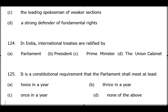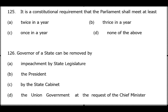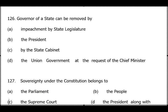Parliament shall meet at least twice a year — there should not be a gap of more than six months between two Parliament meetings. Governor of a state can be removed by the President. The Governor is mentioned under Article 153 and is always appointed at the pleasure of the President.